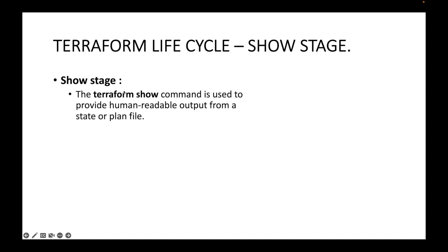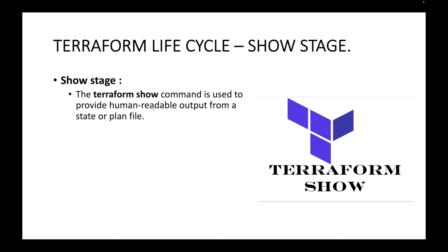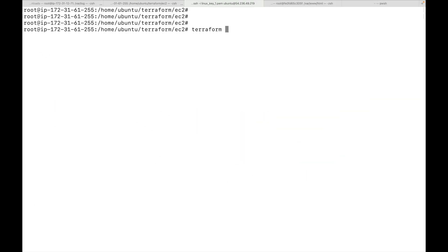The terraform show command will show us output in a human readable format. Whenever we create our resources, Terraform will create either a state file or a plan file. What the terraform show command does is read the output from this file and show it in a human readable format, which is essentially a JSON output.